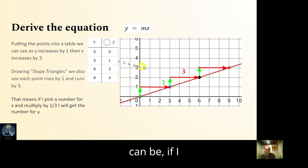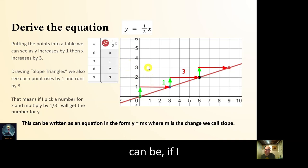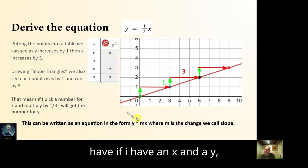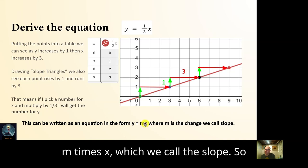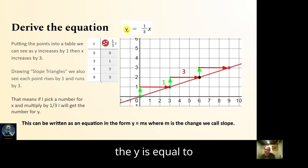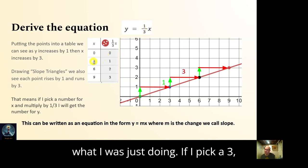My equation can be written as: if I have an x and a y, then y is equal to m times x — where m is the slope. So y equals one third times x.